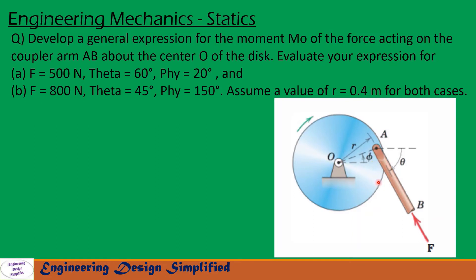The first portion of the problem is when F = 500 N, theta = 60°, and phi = 20°. We need to find the moment due to this force about O. The second portion is when theta = 45° and phi = 150°, meaning this coupler link will come to this position. The distance O to A, that is r = 0.4 m, is given here. Let us see in the coming slides how to solve this problem.